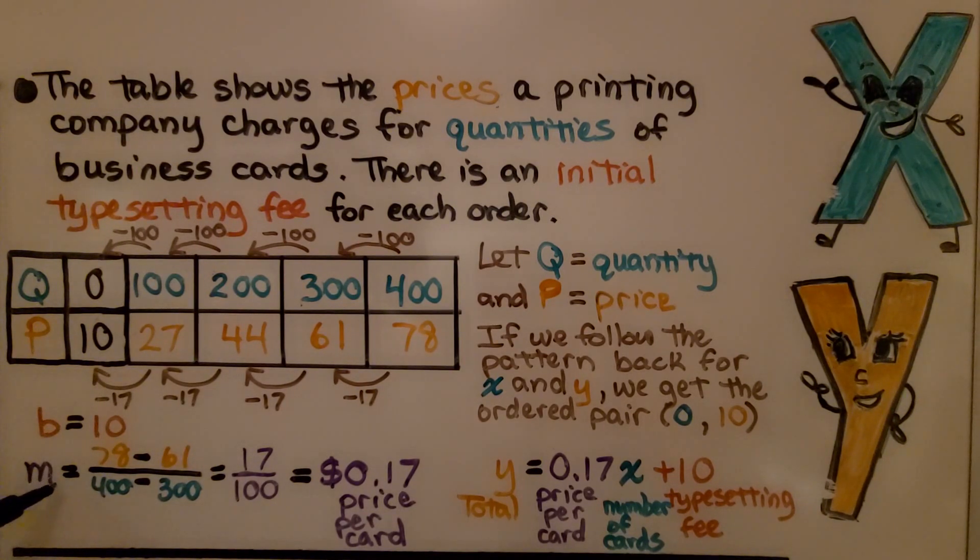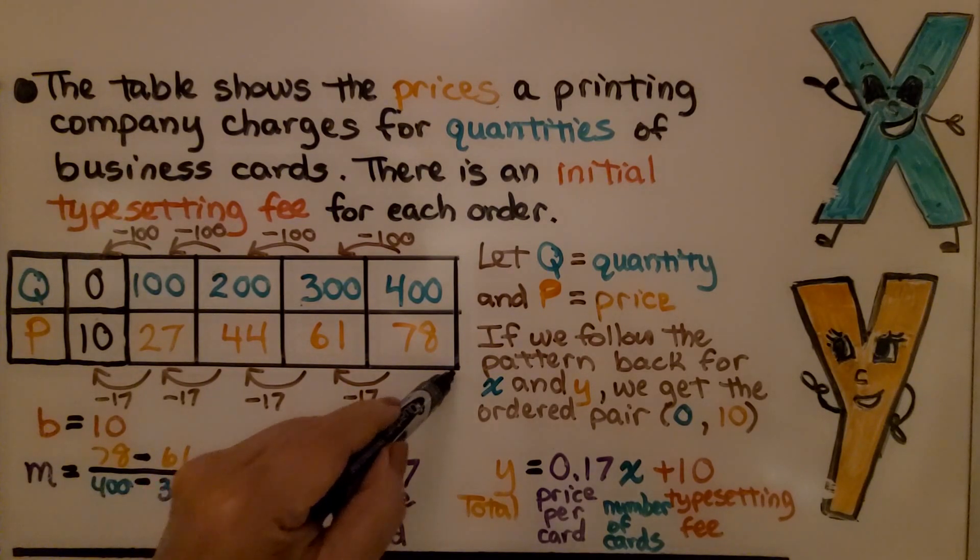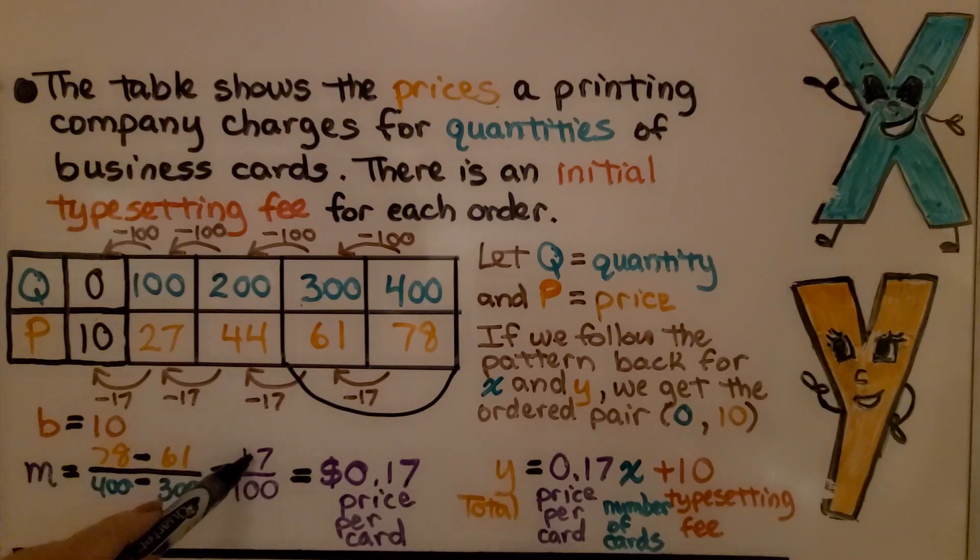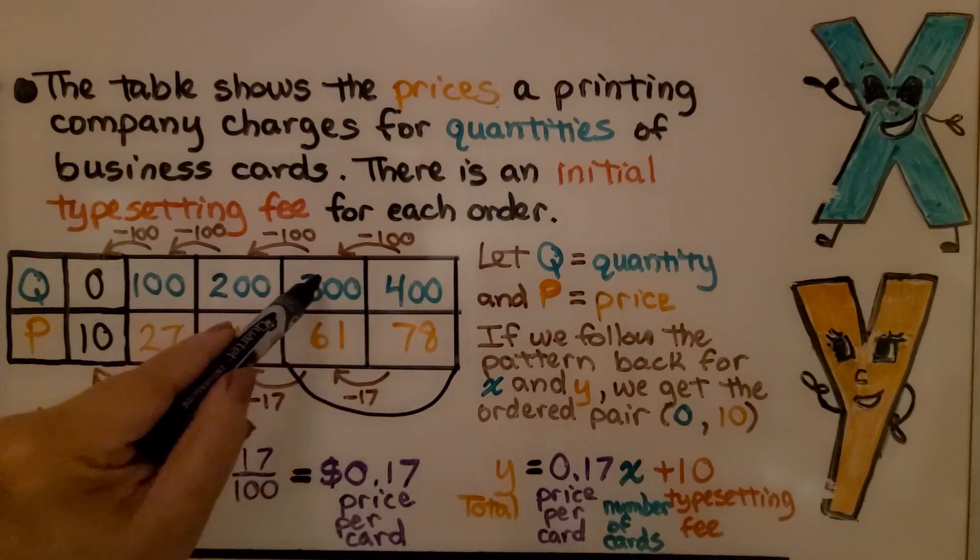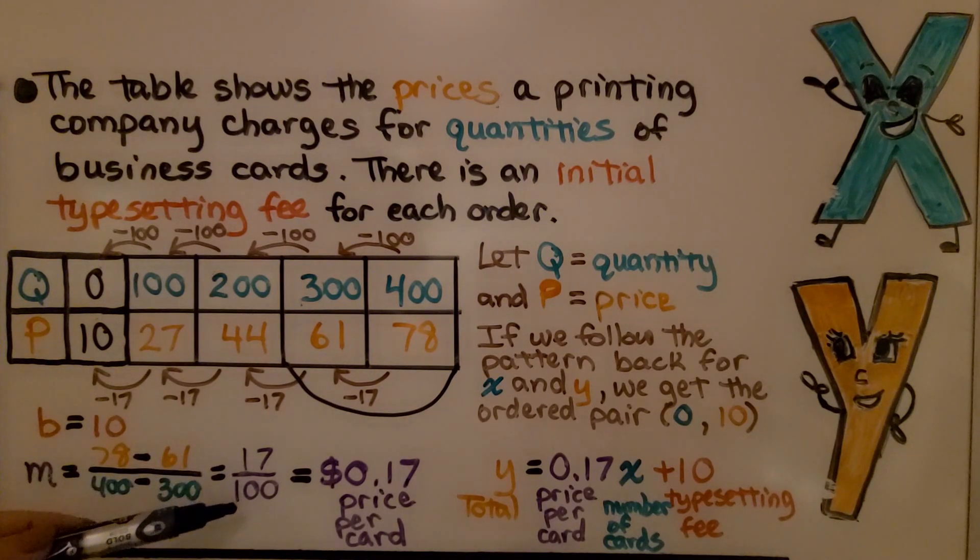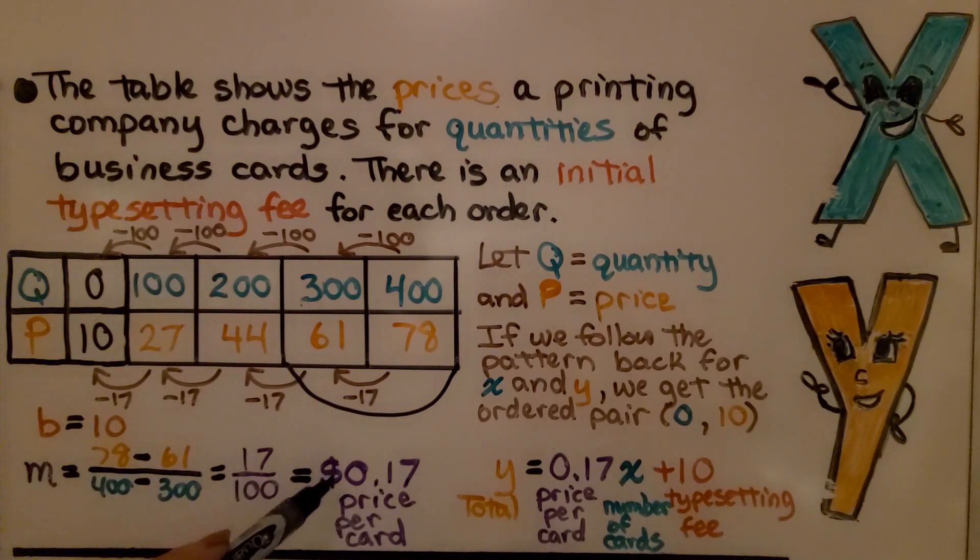Now we just find the slope by using two of these points. I decided to use these two. We have 78 minus 61, which is 17, and 400 minus 300, which is 100. We have 17 hundredths. This is the price per card, so we can write it as $0.17 for 17 cents per card.